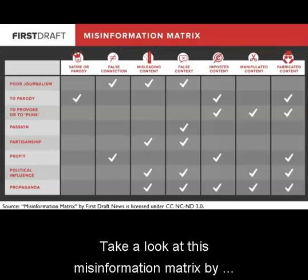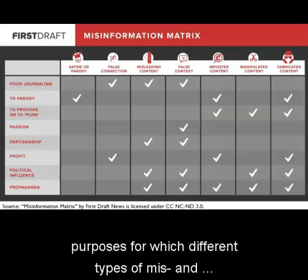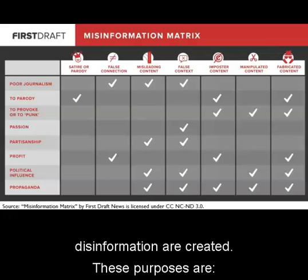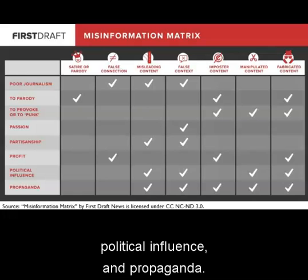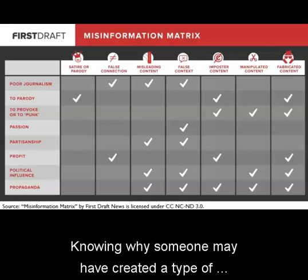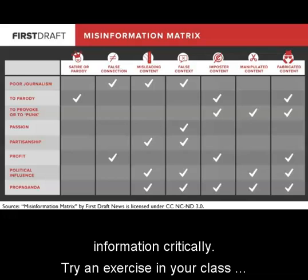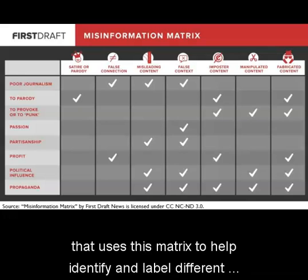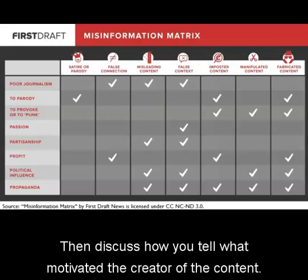Now let's take a look at this misinformation matrix by Wardle, which helps identify the purposes for which different types of mis- and disinformation are created. These purposes are: Poor Journalism, Parody, Provoke or Punk, Passion, Partisanship, Profit, Political Influence, and Propaganda. Knowing why someone may have created a type of content is an important aspect of evaluating information critically. Try an exercise in your class that uses this matrix to help identify and label different types of mis- and disinformation, then discuss how you can tell what motivated the creator of the content.